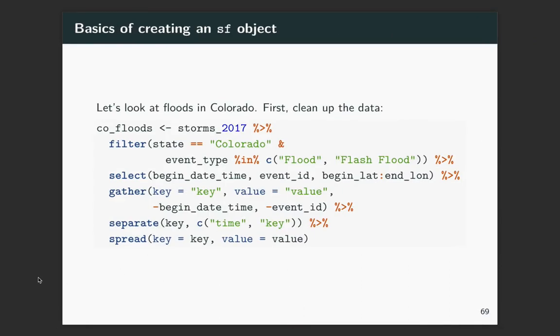Alright, so let's look at floods in Colorado. This is from the storm's data as well. And so we're going to clean up this data, and then we're going to move it into the SF object type so that we can map it using that GMSF. So I'm taking the storm's data, filtering just to the events in Colorado and events with types that are either a flood or a flash flood. For the next step, I'm selecting out certain columns, so the begin date time, the event ID, and then some information on the latitude and longitude of the beginning and the end of the event.